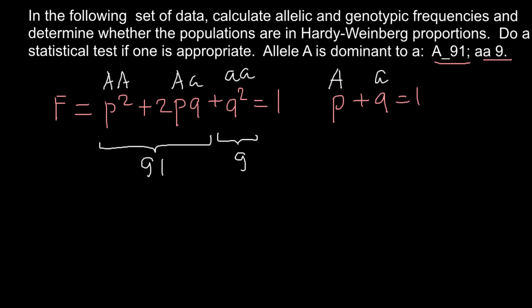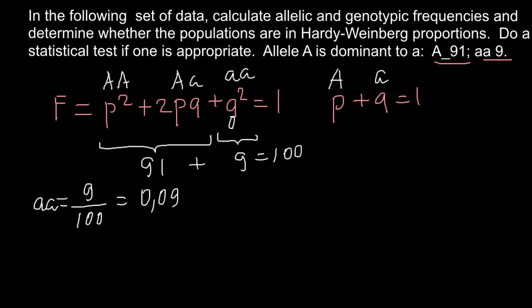We can say that this represents nine people if we are talking about a population of people, and here we have 91 different genotypes representing 91 people. So together we have 100 people. To calculate the frequency of the homozygous recessive genotype, we divide 9 by the total number of people, which is 100. The frequency of the homozygous recessive genotype is therefore 0.09.